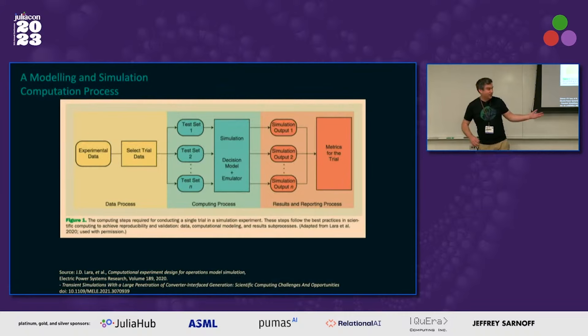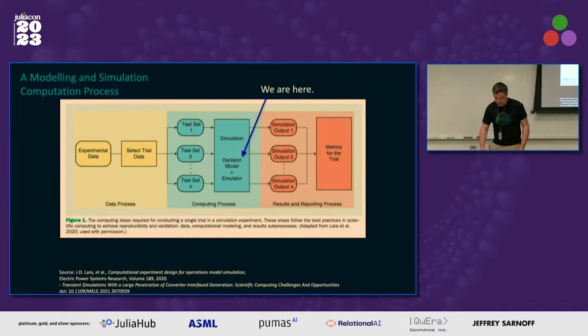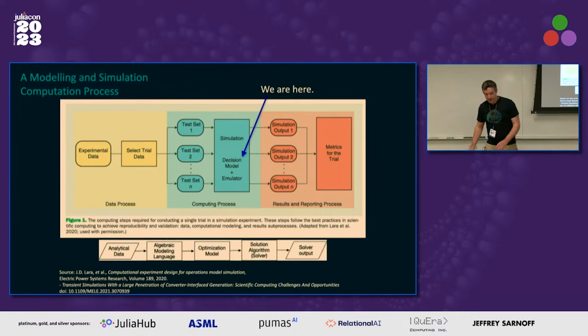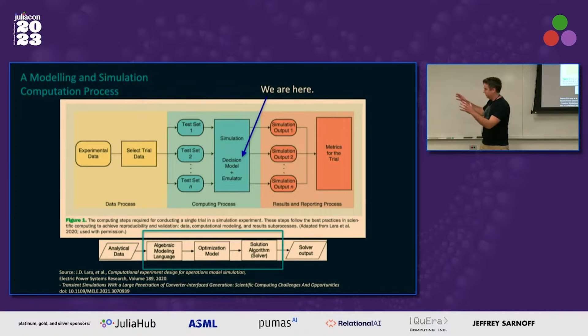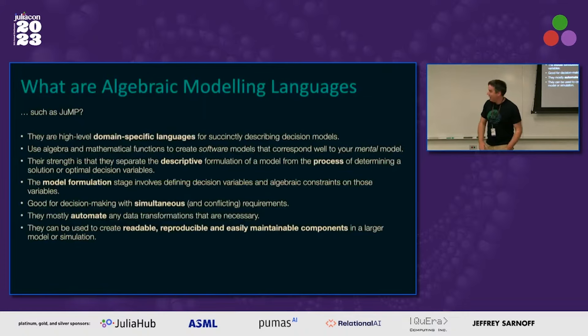This is a brilliant graphic that someone here produced — essentially, what are we doing when we're doing JuMP? We're doing a reproducible workflow. Where are we in this workflow? Out of the data process, computing process, and the results and reporting process, we're in the decision model — right in the heart of things. That's what's happening in JuMP. More simply, if this is the pipeline: analytic data, the algebraic modeling language is where JuMP is, the optimization model, the solver solution algorithm, and solver output.